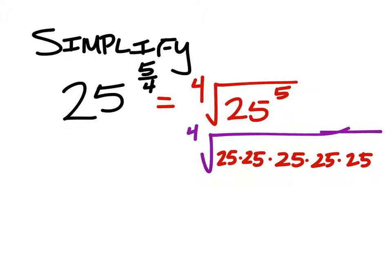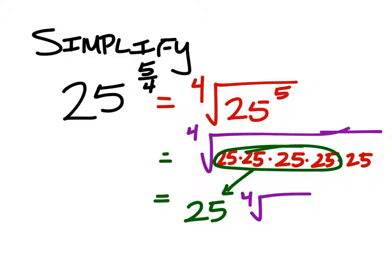So this is what I have. And I can see I've got a group of 4 25s right here. So this ends up being pulled out of the fourth root as just 25. But then I've still got that fourth root of the last 25 right there.